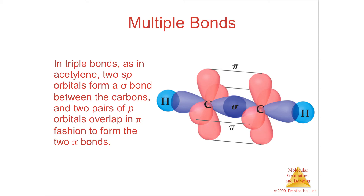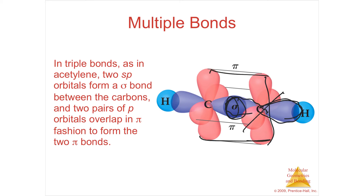Here is a triple bond. I've got two atoms with SP hybridization — remember, this is a p that's unoccupied, and here's another p that's unoccupied. You'll get a sigma bond in the middle between them, then a pi bond in the y direction, and a pi bond in the x direction. Two pi bonds and a sigma bond is a triple bond. This is ethyne — you've got two carbons and two hydrogens, which is a fuel gas.